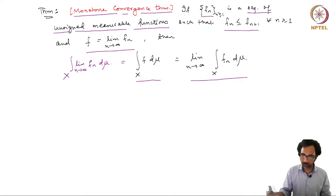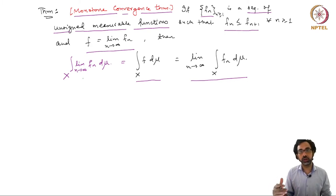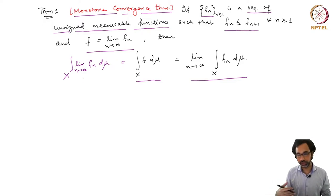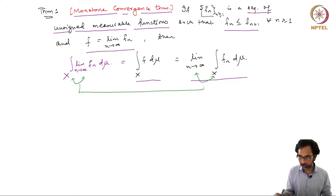One can view this as the interchange of limit and integral signs, which is allowed when you have a sequence of non-decreasing unsigned measurable functions converging pointwise to a function f. So this is the interchange of limits and integration signs.